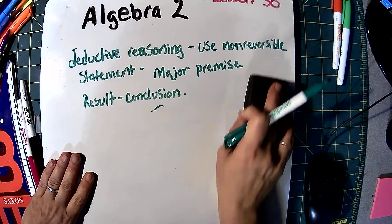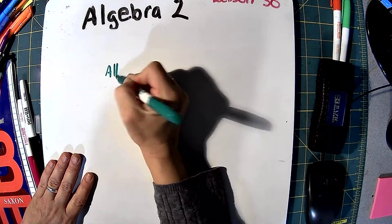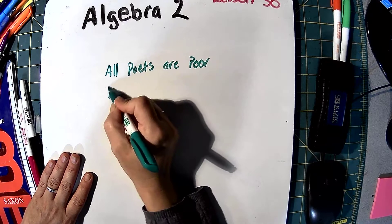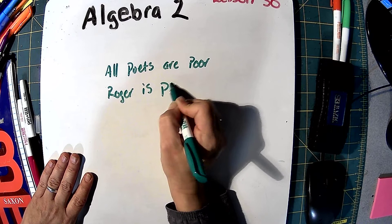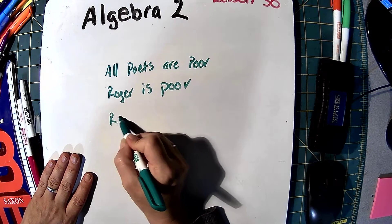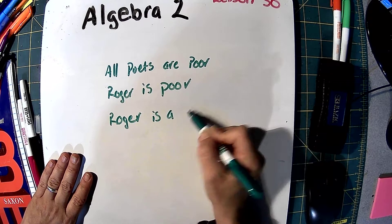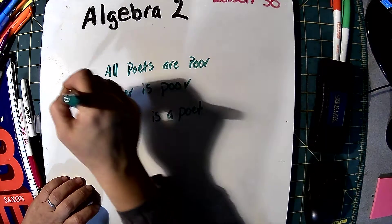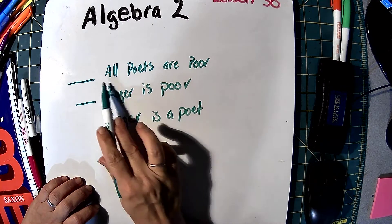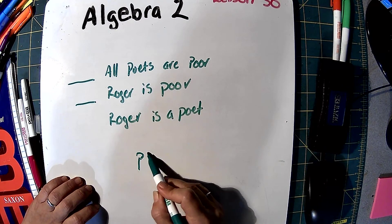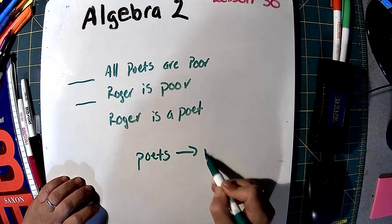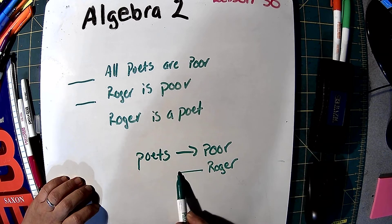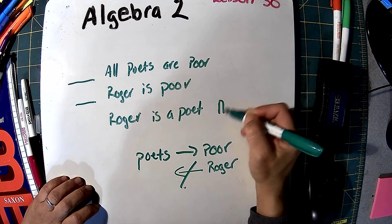Now let's look at one that is not valid. All poets are poor. Roger is poor. Roger is a poet. Our major premise says poets equal poor. We've got Roger as being poor — does that mean he's a poet? No, it doesn't, because we can't go backwards. So this one is not valid.